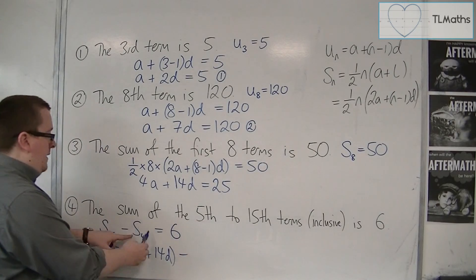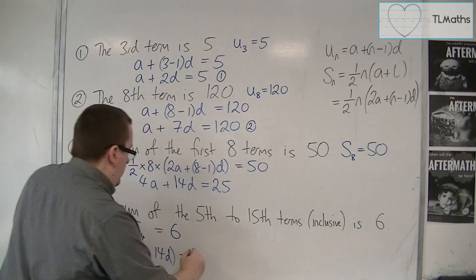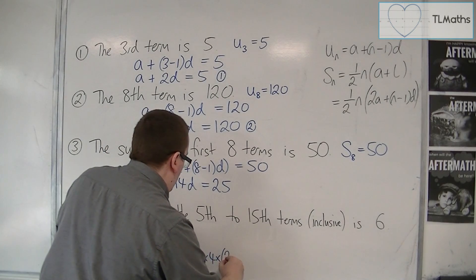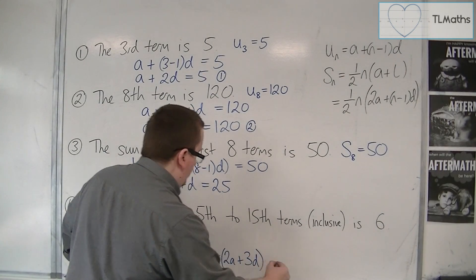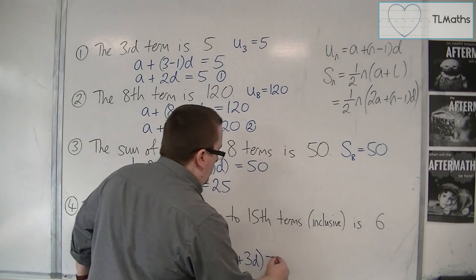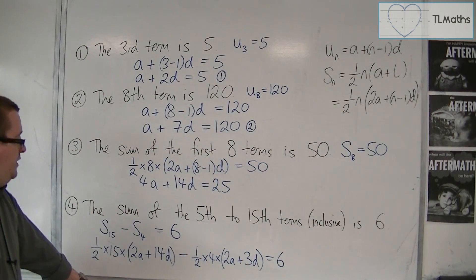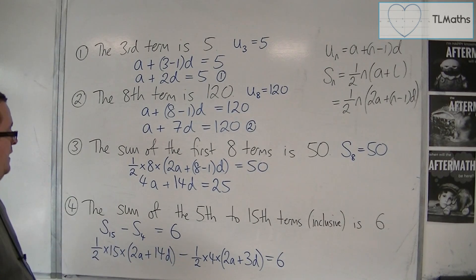Take away S4, so using that formula again, one half times n times 2a plus n minus 1, so 3D, and that's all going to be equal to 6. So you would then need to simplify this out, multiply it out and collect like terms.